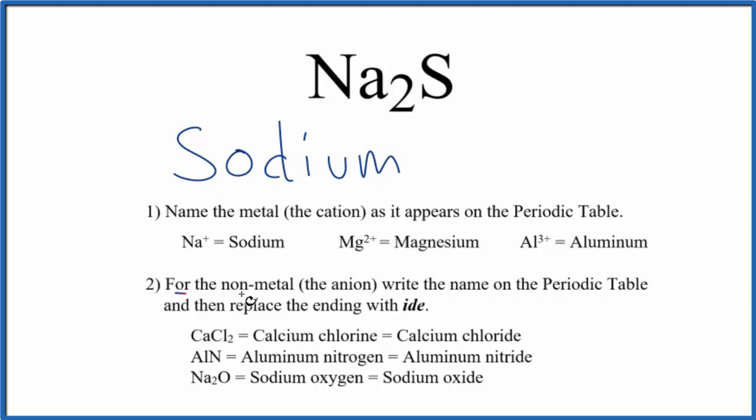Next, we write the nonmetal as it's on the periodic table. So we write S-U-L-F-U-R, and small s here. After that, we're going to replace the ending with I-D-E. So for sulfur, we change the ending to sulfide.